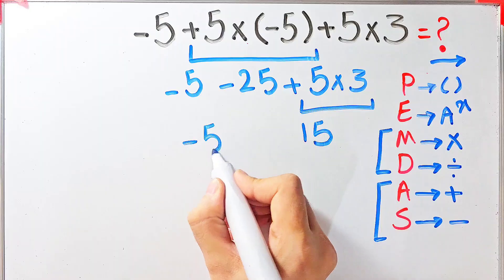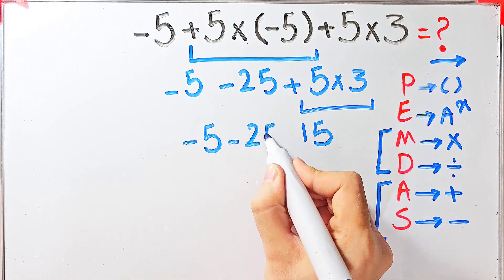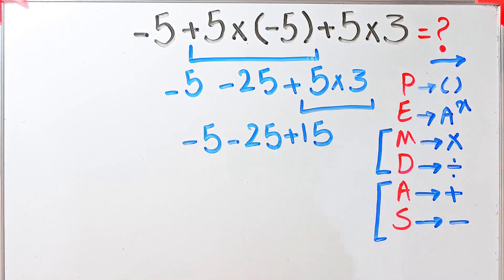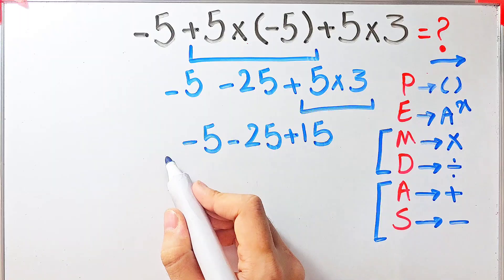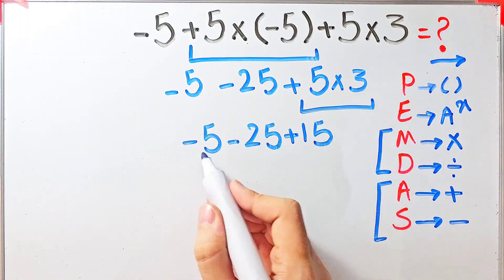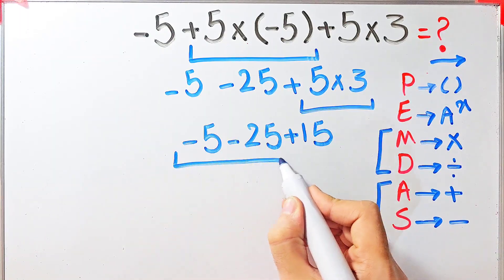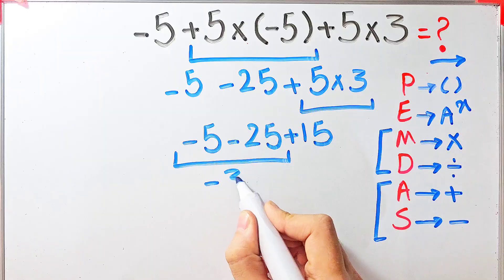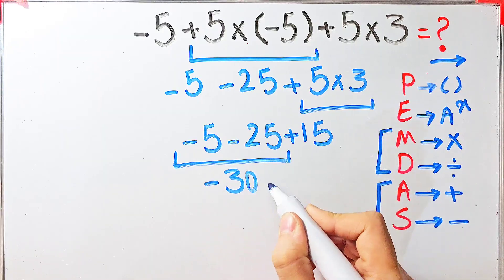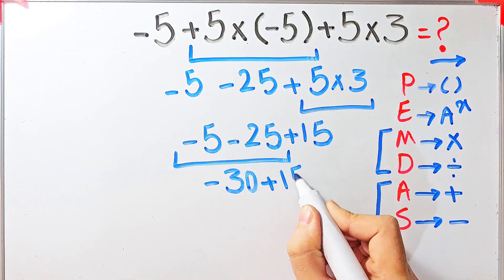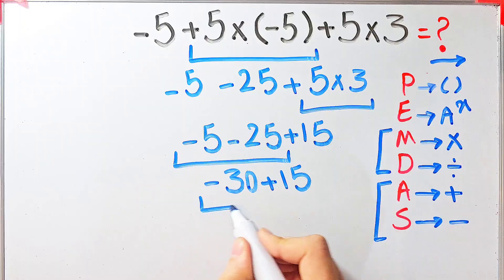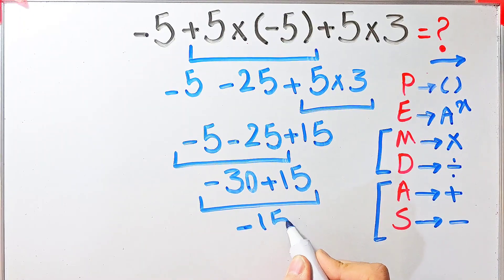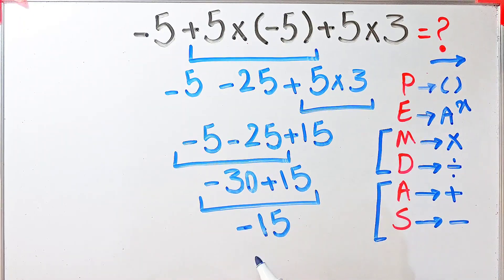Negative 5 minus 25 equals negative 30. Now we have negative 30 plus 15. Negative 30 plus 15 equals negative 15, and the final answer of this question equals negative 15.